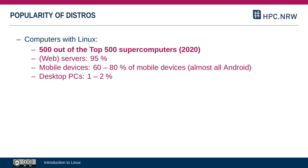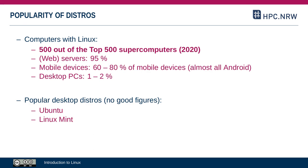For desktop PCs it looks a little different. Most of those are Windows PCs, which has nothing to do with the Unix and Linux sphere. There are very few good figures on how many desktop PCs run Linux, but the estimate is around 1 or 2%, with the most popular distributions being Ubuntu and Linux Mint. So those are some of the most important terms and background on Linux that you should be familiar with.